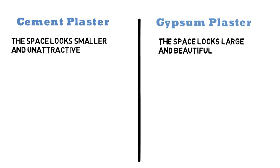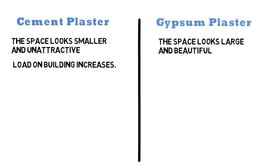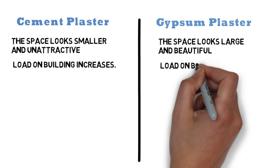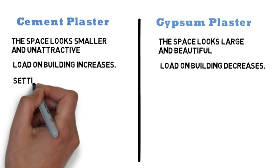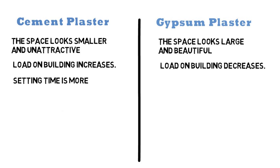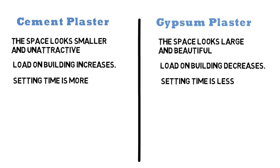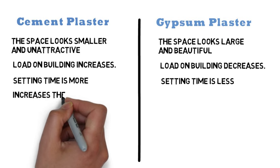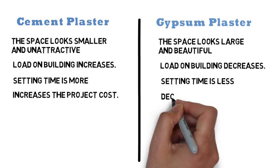Density of cement plaster is higher than gypsum plaster, hence the load on the building increases. Density of gypsum plaster is less compared to cement plaster — gypsum plaster is light in weight. A minimum 24-hour interval between two coats of cement plaster is required. The setting time of gypsum plaster can be controlled and the time between two successive coats is very small. The application of cement plaster is a time-consuming process and hence increases the project cost, whereas the application of gypsum plaster is a time-saving process and thus decreases the project cost.